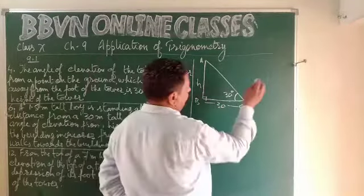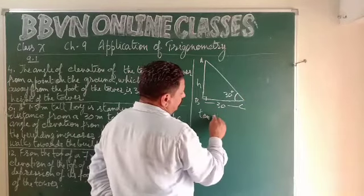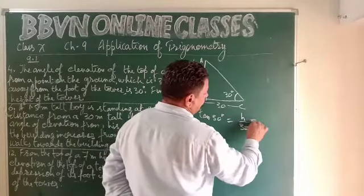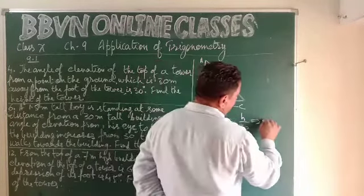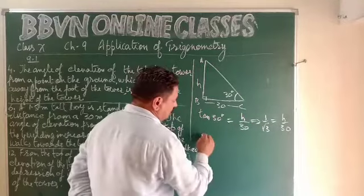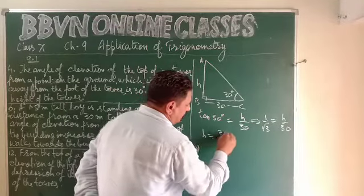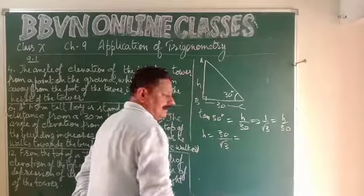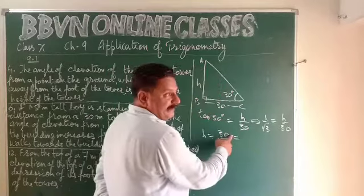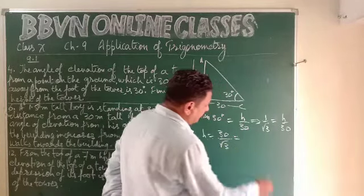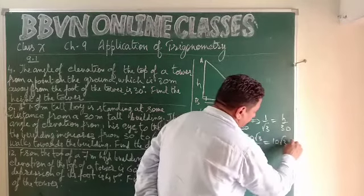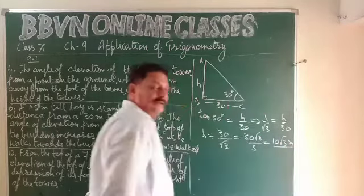In triangle ABC, tan 30° equals perpendicular h upon base 30. Tan 30 is 1 over root 3, so 1/√3 = h/30, giving h = 30/√3. The denominator cannot be left irrational, so we rationalize by multiplying numerator and denominator by √3, giving 30√3 / 3, which equals 10√3 meters.